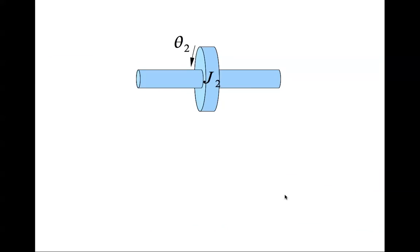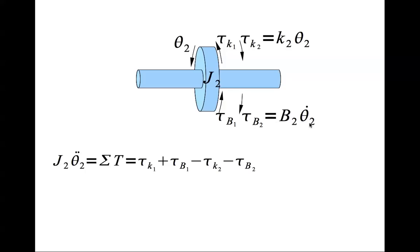Let's look at J2. The torques that act on J2 are tau k1 in a direction that is opposite of what it acted on J1, these two torques will balance each other as internal torques. Similarly tau b1. In addition, there is a torque due to the second shaft in the anti-clockwise direction: tau k2 equals k2 times theta 2, tau b2 equals b2 times theta 2 dot. Now we do the summation of all torques.